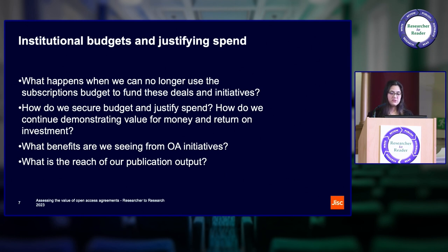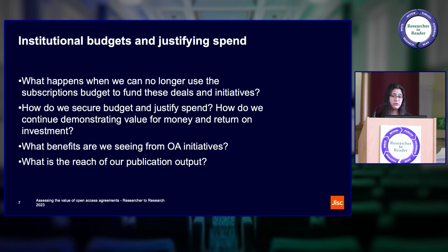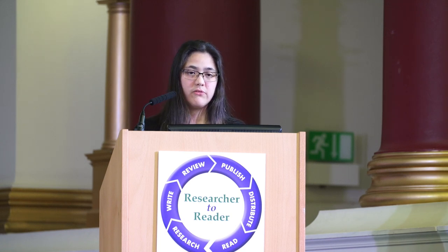When it comes to institutions and the institutional perspective, especially for librarians, the key question and concern is very much around budgets and justifying spend. OA agreements are largely funded or paid for out of subscriptions or collections budgets within libraries, often propped up by contributions from other OA funds. At some point it won't really make sense anymore for these deals to be paid for out of a subscriptions budget. From a librarian's perspective, they're really looking to make a case for open access generally so that they can secure budget and justify spend.